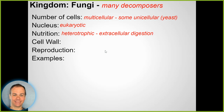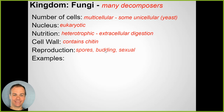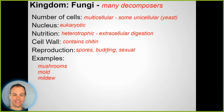Fungi are heterotrophs - they're consumers that have to break down organisms to obtain nutrients and energy. They have a cell wall, but it's made of different material than a plant cell wall or bacterial cell wall. Typically fungi reproduce using spores, which are reproductive cells that, when they land in an opportune area, can start to grow - almost like tiny little seeds. Examples: mushrooms, mold that grows on bread or bathroom walls, mildew, and yeast.